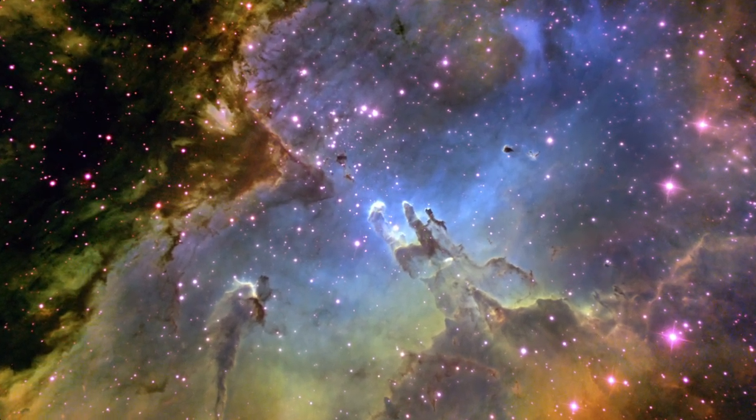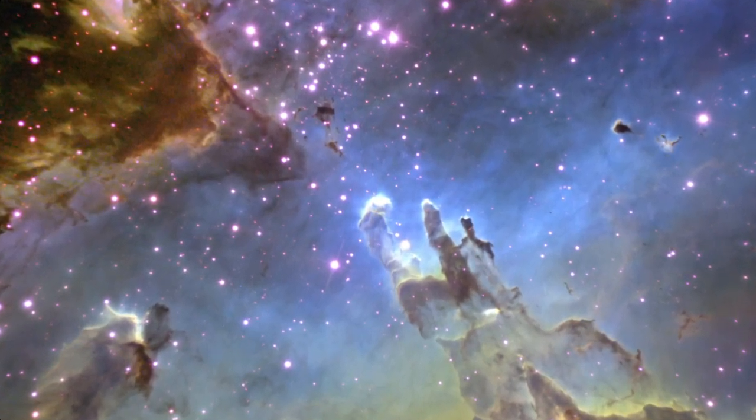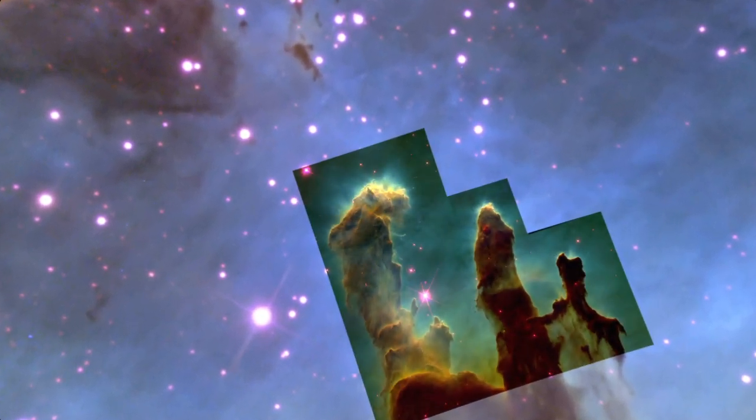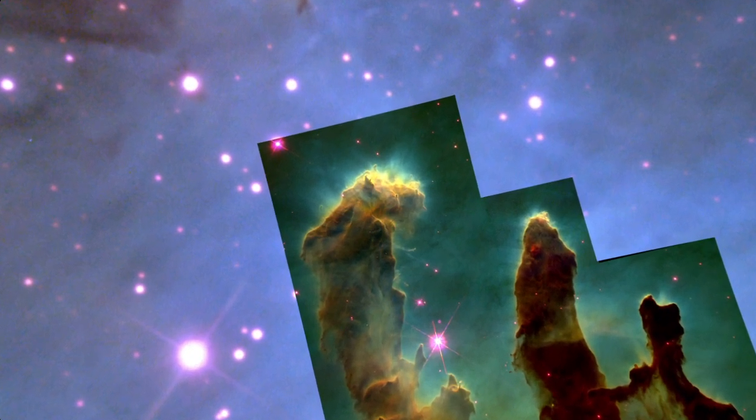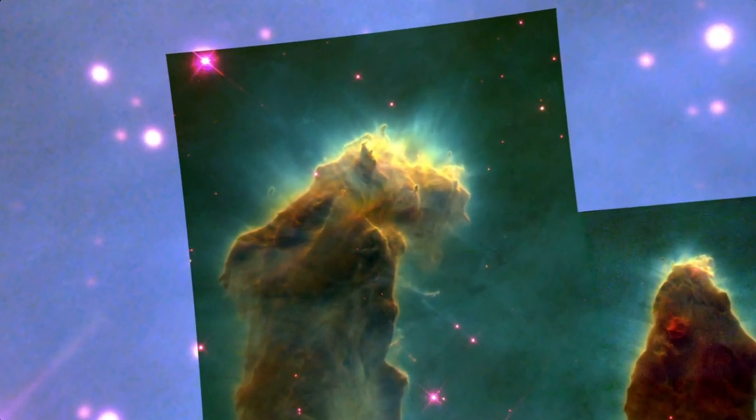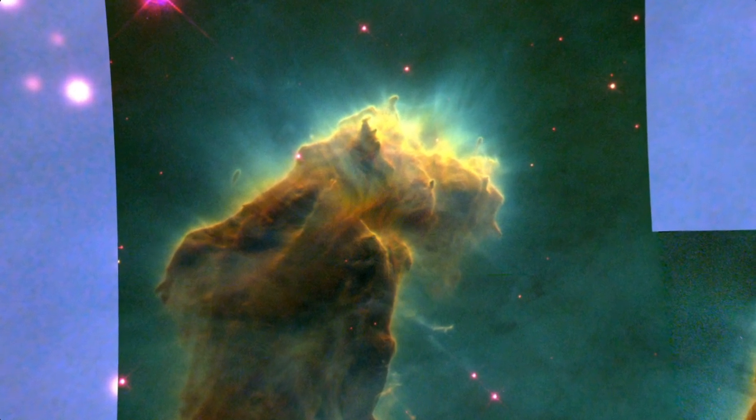But the youngest stars seen here are already perhaps a million years old, hardly toddlers. Stars and planets form in the dark inside vast cold clouds of gas and dust such as these pillars imaged by the Hubble Space Telescope.